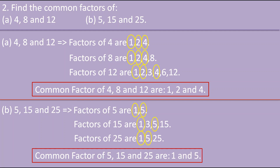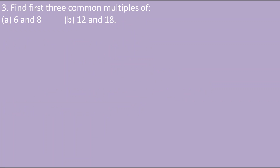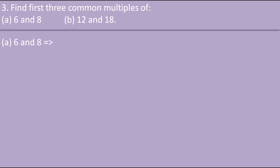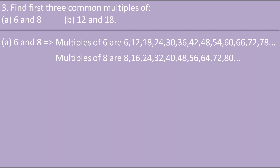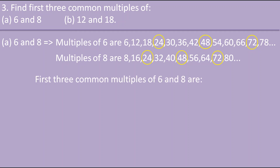The third question asks us to find the first 3 common multiples. For 6 and 8: we find the multiples of 6 and the multiples of 8, extending as needed until we get three common values. The first common multiple is 24, next is 48, and next is 72. So the first 3 common multiples of 6 and 8 are 24, 48 and 72.